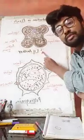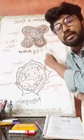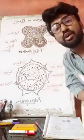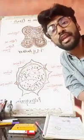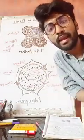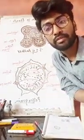This is the structure of the transverse section of the anther, and this is the structure of a pollen grain, also called microsporangium. Thank you very much.